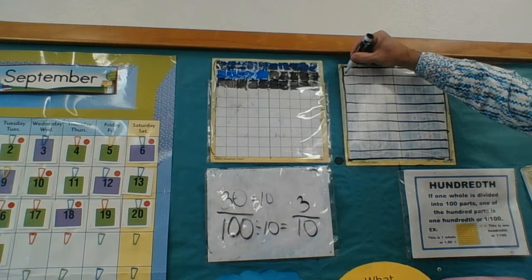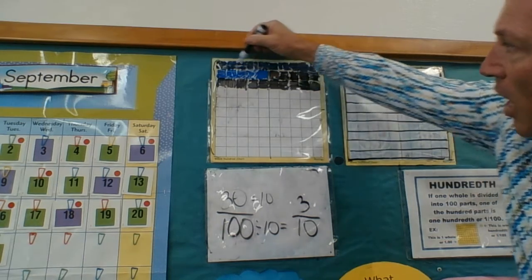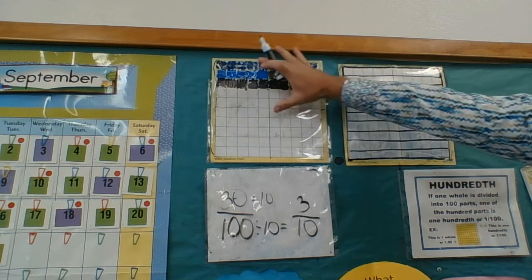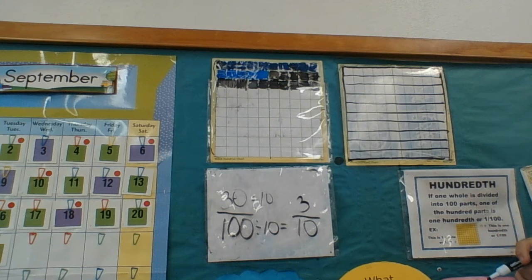So what this would look like is, well, look over here. I have 1, 2, 3 rows out of the 10 rows. Isn't that cool?